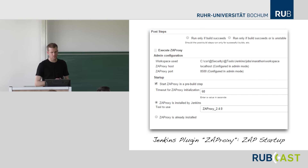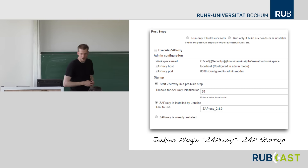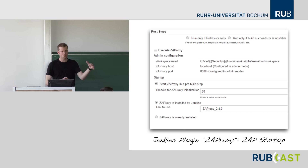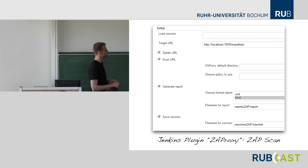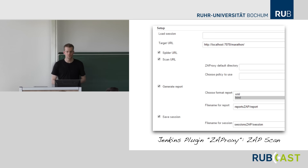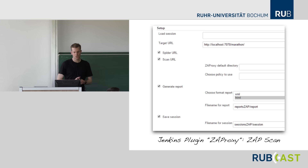In Jenkins, you configure the plugin to start ZAP proxy in headless mode during the build, giving it some time to start and configuring the port number. During the nightly build, ZAP proxy will be automatically started from within Jenkins. You provide a pointer to the URL you'd like to scan or spider and give it an output format like XML or HTML to place into the build folder. These tools also save a session file that a security professional can open with the ZAP desktop version to closely inspect any findings.